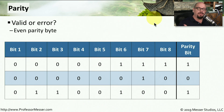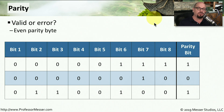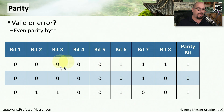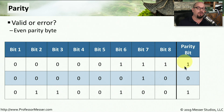Now that parity bits have been added and transactions have occurred inside RAM, we're ready to write this information back to storage. But first, we check that parity matches. Looking at the first byte: 0, 0, 0, 0, 0, 1, 1, 1 with a parity bit of 1. Counting the ones gives 4, an even number. Since even parity is correct, this particular byte is valid.